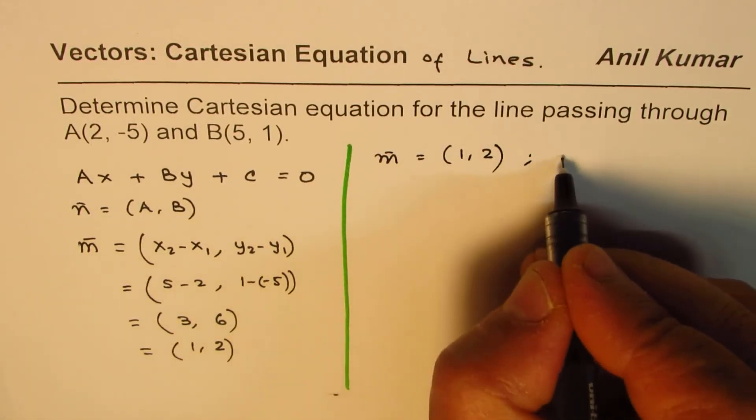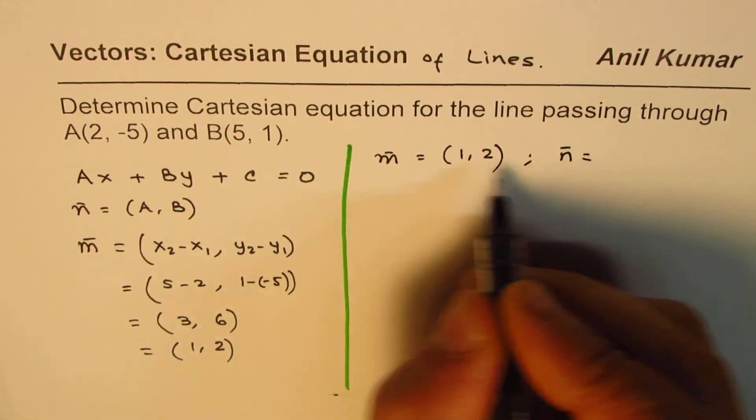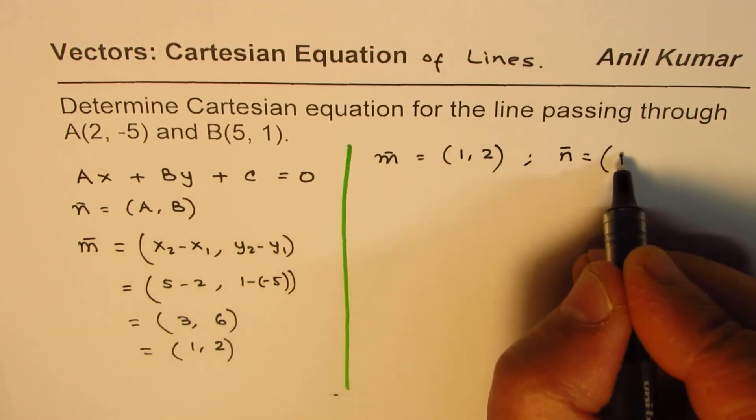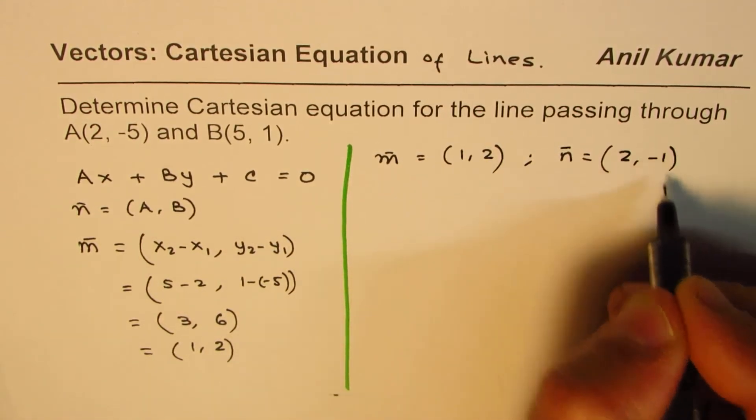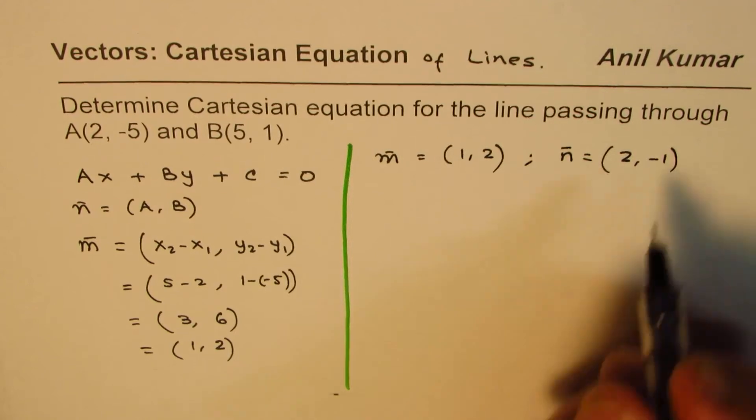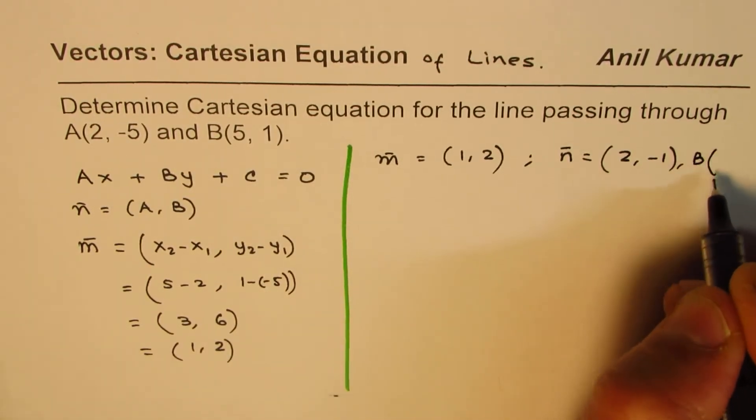So from here we can find what normal should be. So normal is you reverse this and one of the signs changed. We already know points. Let us use point B which is (5, 1).